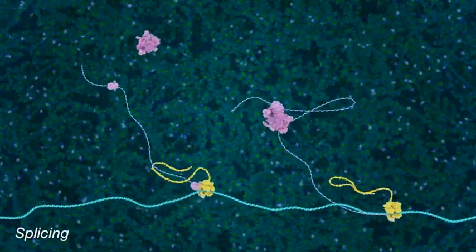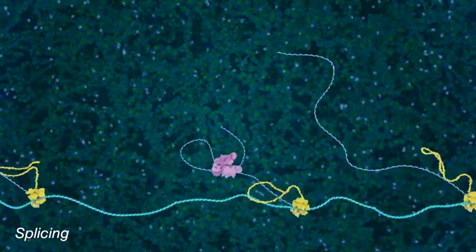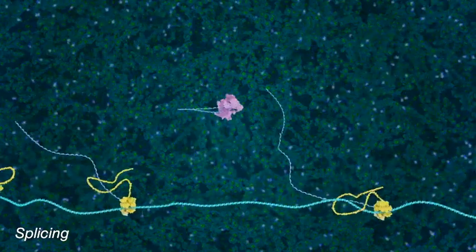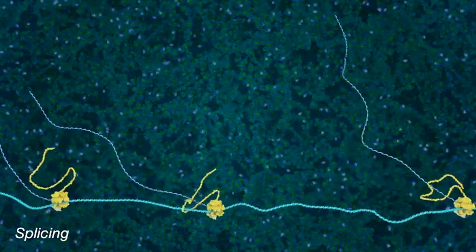As viral RNAs are produced, some are spliced, that is looped, cut, and glued back together, producing RNAs of different lengths.